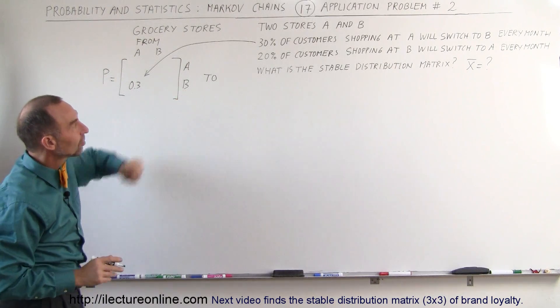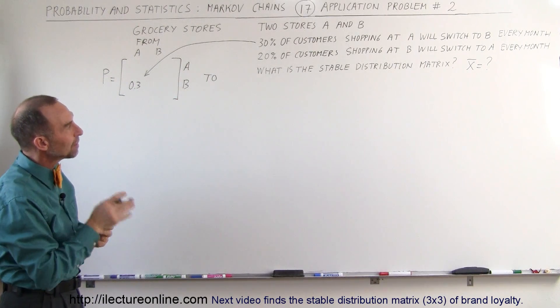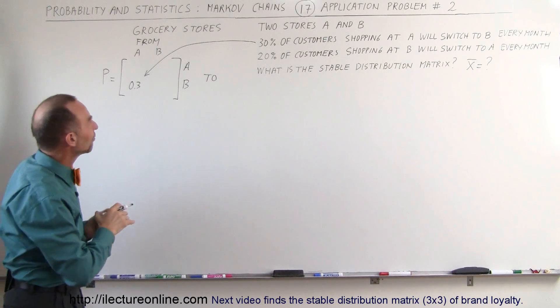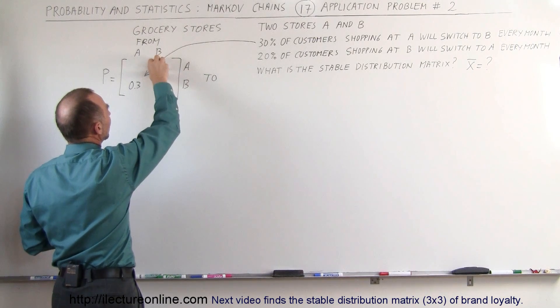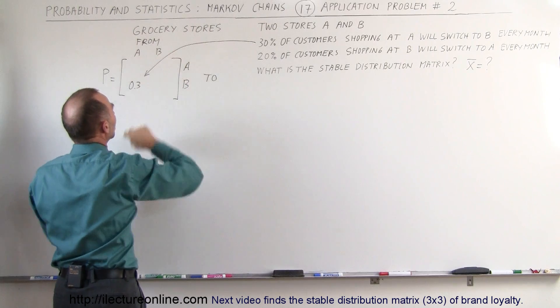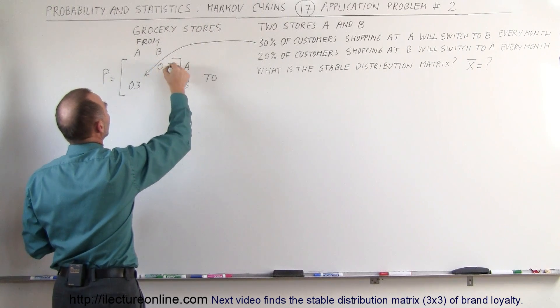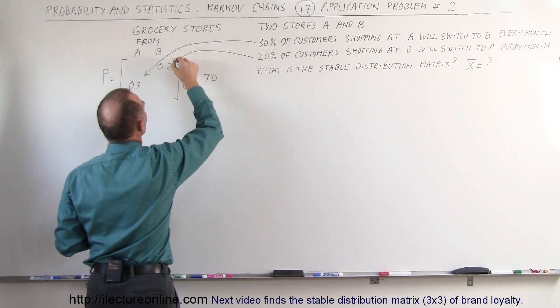Now on the second sentence, we have 20% of customers shopping at B and they will switch to A every month. So of the customers shopping at B right here, they will go back to A and it's a 20% change, so that's 0.2.